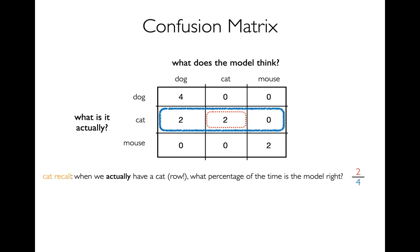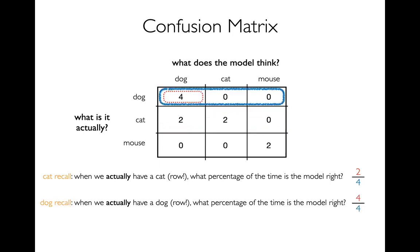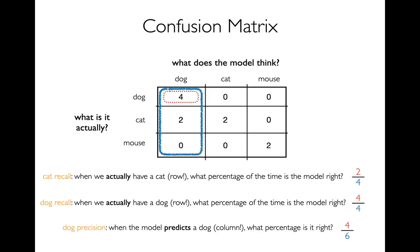One easy way to remember recall versus precision is that recall has an 'r' and row also has an 'r.' For dog recall — when we actually have a dog, what percentage of the time is the model right? I'm looking at that top dog row and dividing dog-dog by the sum of everything else. In this case we always get it right when we see a dog, so four over four — 100 percent dog recall.